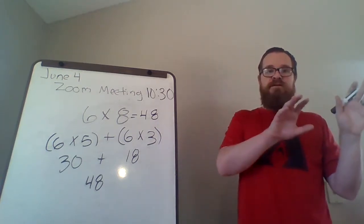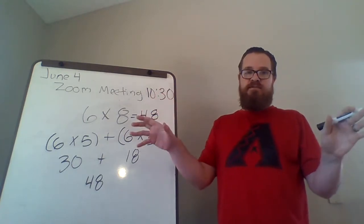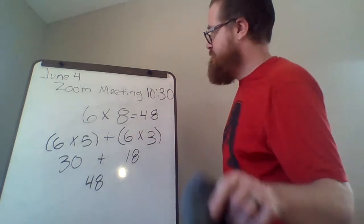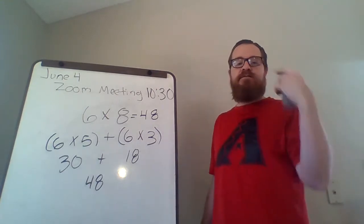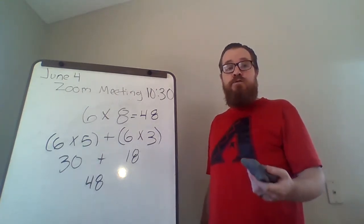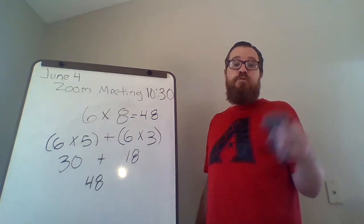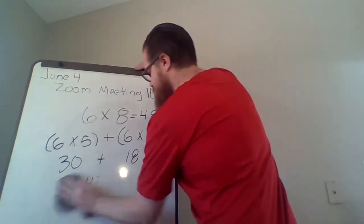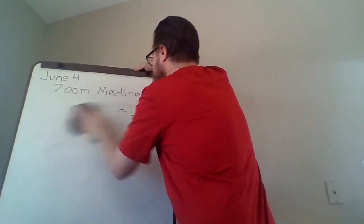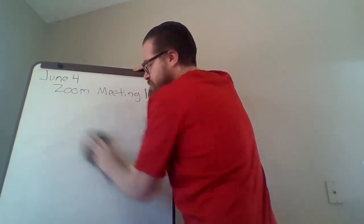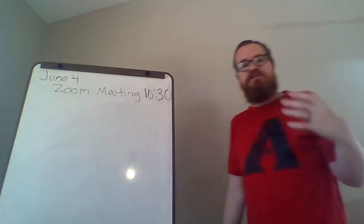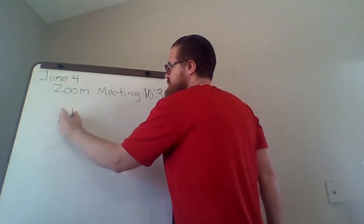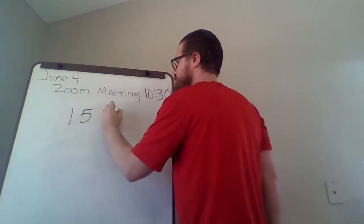So this is the idea behind the distributive property. Taking a bigger number, breaking it apart into pieces, and then putting it back together again. Now, the reality is, hopefully you knew what 6 times 8 was. And more often, we use the distributive property for bigger numbers when we're trying to multiply. Let me give you an example like that. It really comes in handy when you're multiplying by two-digit numbers.